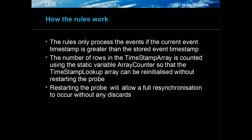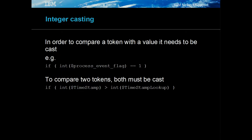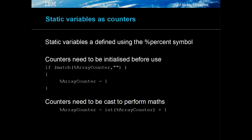Restarting the probe allows a full resynchronisation. The rules file logic used in this example includes integer casting, which allows math functions to be used on the rules file tokens. Tokens are strings by default. Static variables are used as a counter. Counters need to be initialised based on a null string and need to be cast as integers to add numbers to them.